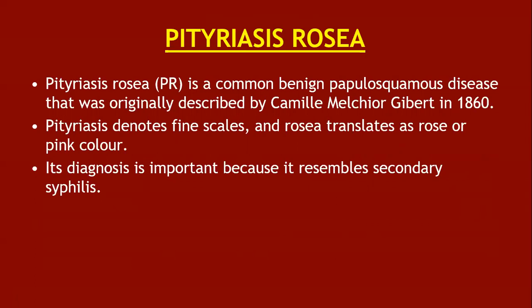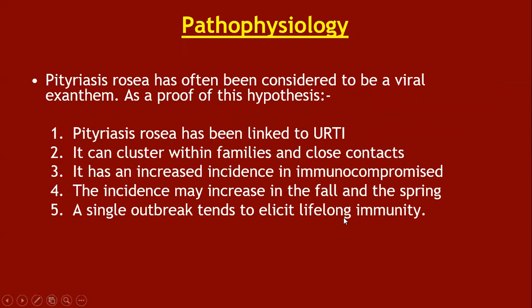Pityriasis rosea is a common benign papulosquamous disease originally described by Camille Melchior Gibert in 1860. 'Pityriasis' denotes fine scales and 'rosea' translates as rose or pink color. Its diagnosis is important because it resembles secondary syphilis. Pityriasis rosea has been considered a viral exanthem; evidence includes its linkage to upper respiratory tract infection, clustering within families and close contacts, increased incidence in the immunocompromised, and the observation that a single outbreak tends to elicit lifelong immunity.